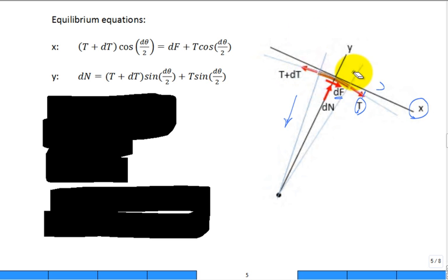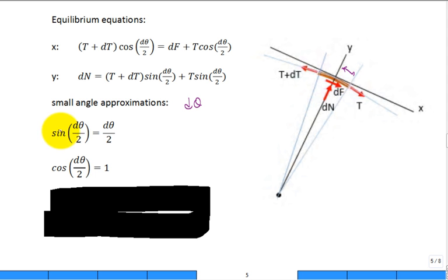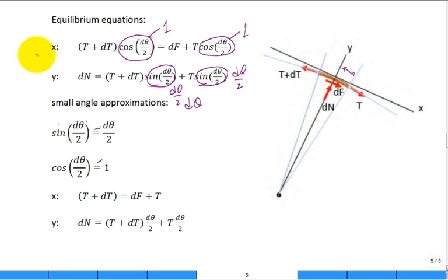Then we make some observations: we're going to be interested in small angle D theta — very small, like the limit epsilon goes to zero in calculus. D theta is differential, so very, very small. If you have the sine of a small angle, it's equal to the small angle, so sine of D theta over 2 equals D theta over 2. Likewise, cosine of something small is approximately 1. So the cosines get replaced by 1 and the sines get replaced by D theta over 2. Our modified equilibrium equations then become: T plus DT equals DF plus T, and DN equals its expression as written.